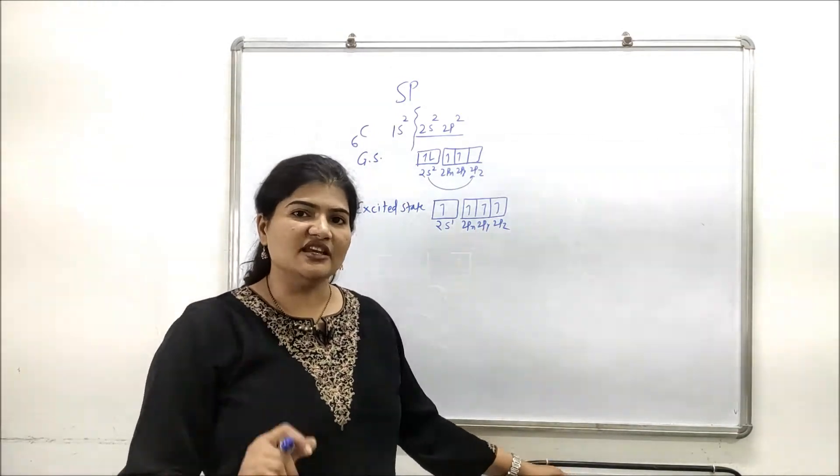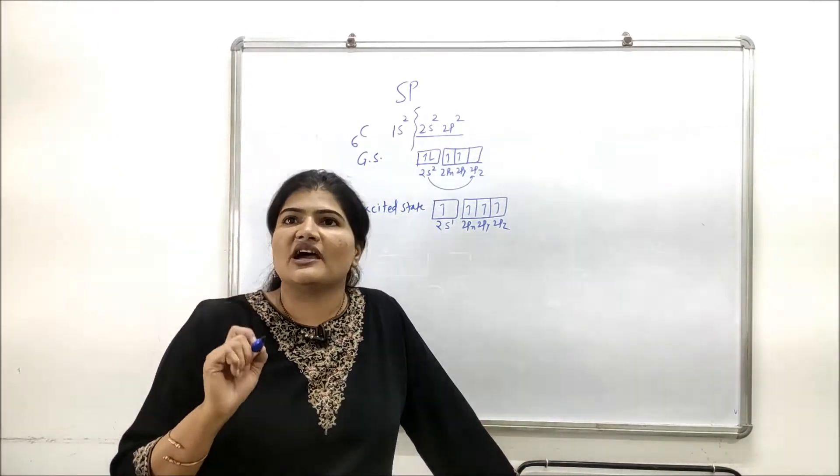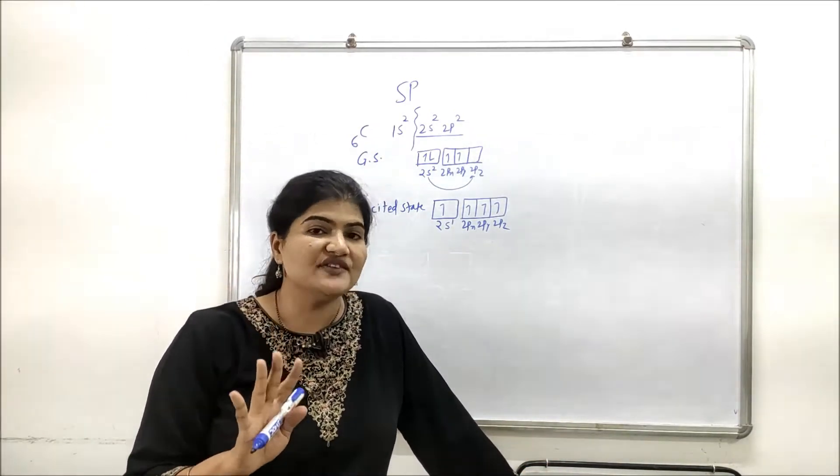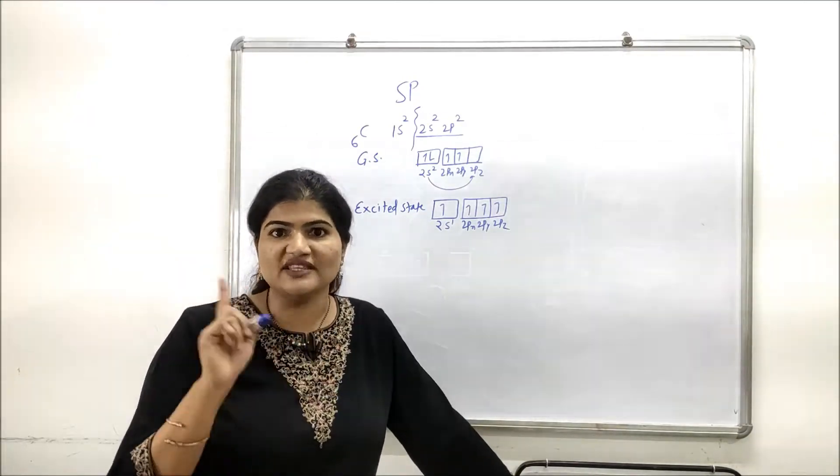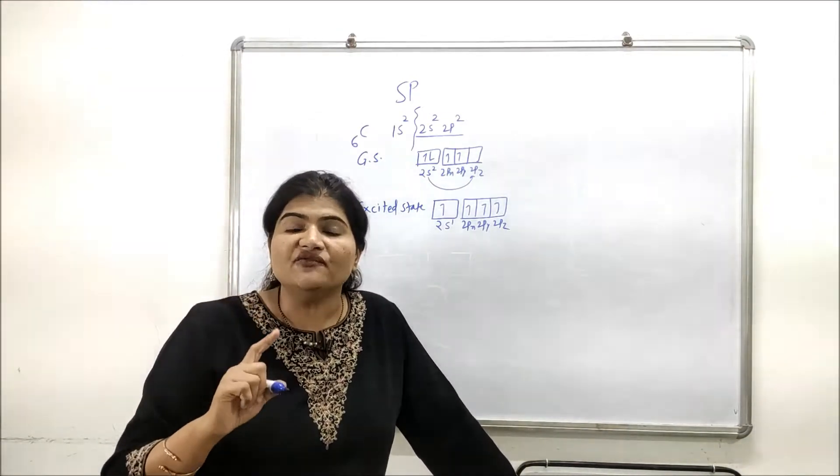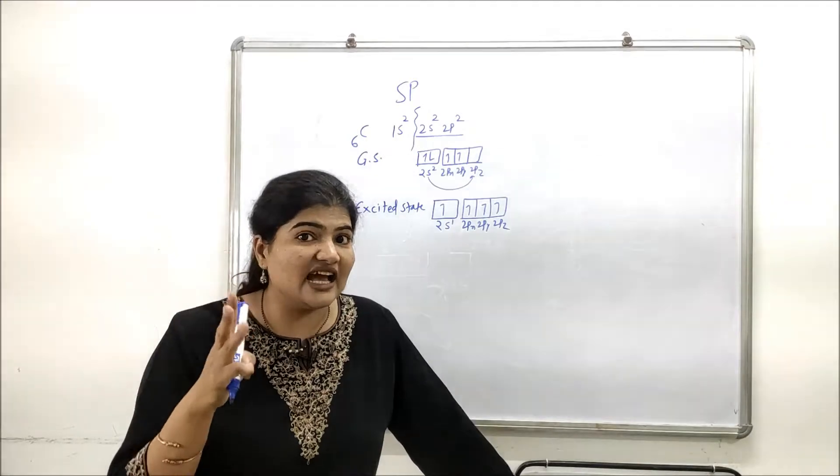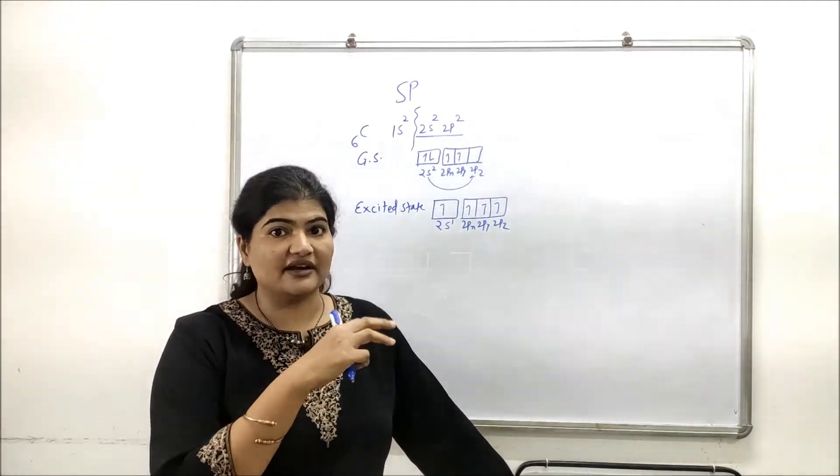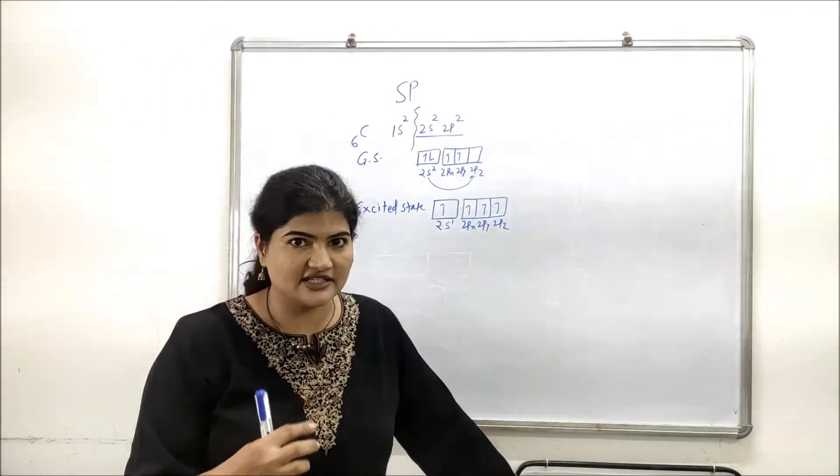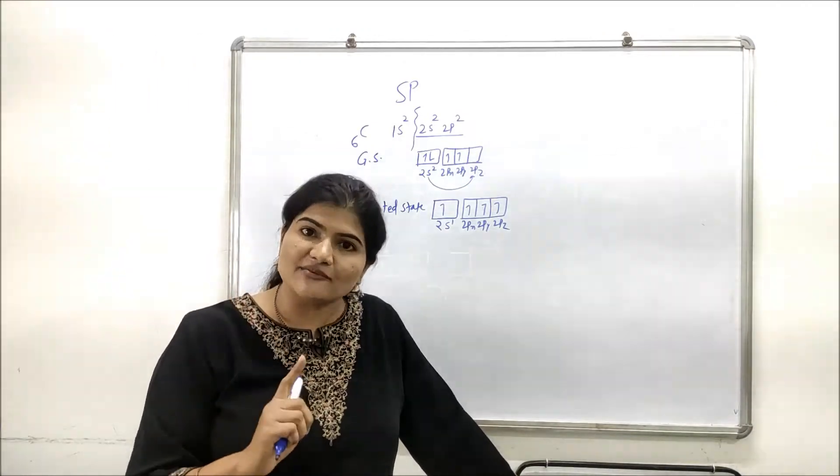We have seen in sp3 hybridization that if carbon forms four bonds with four other atoms, it goes with sp3 hybridization. If it forms bonds with three other atoms, it goes with sp2 hybridization. Similarly, if carbon wants to form bonds with only two other atoms, then it goes with sp hybridization.